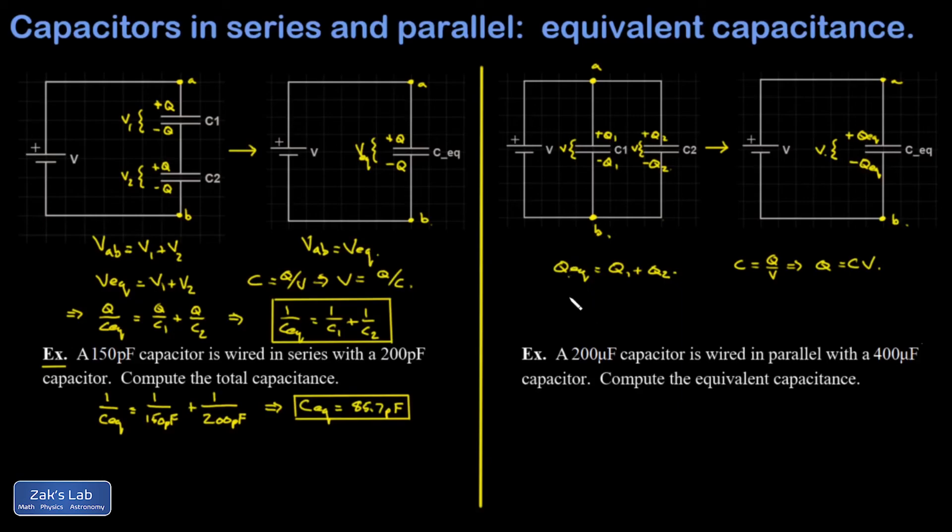And that means for my equivalent capacitor, I have the equivalent capacitance times V. And V, again, is the thing that's the same for every one of these.